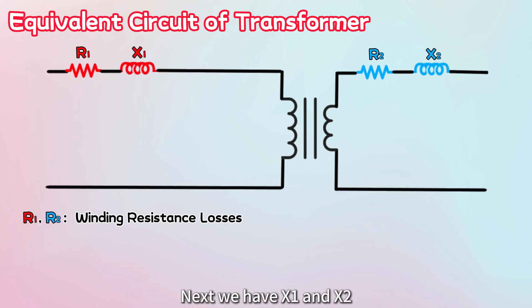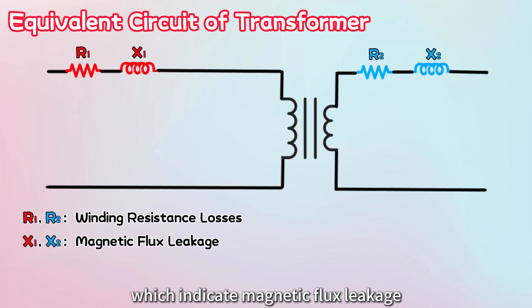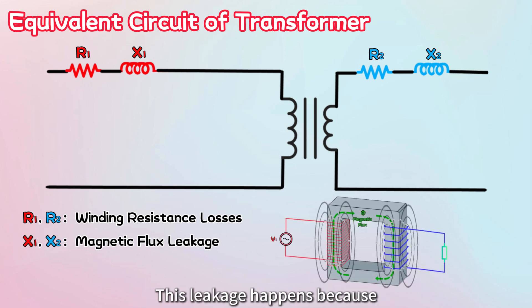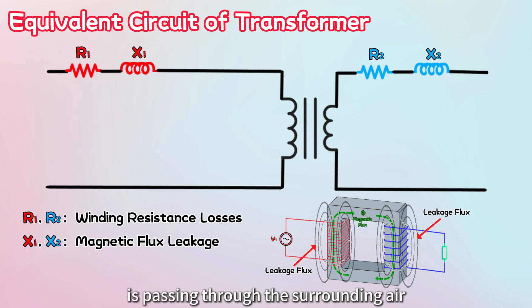Next we have X1 and X2 which indicate magnetic flux leakage. This leakage happens because not all the magnetic flux from the primary winding is contained within the iron core. Instead, some of the flux passes through the surrounding air, leading to minor losses.